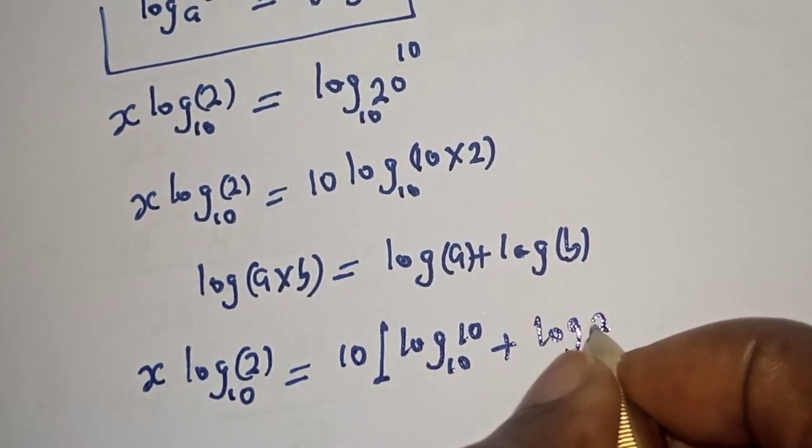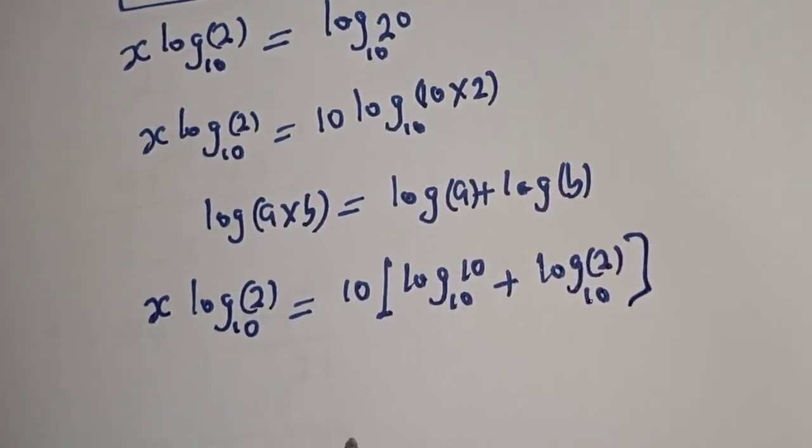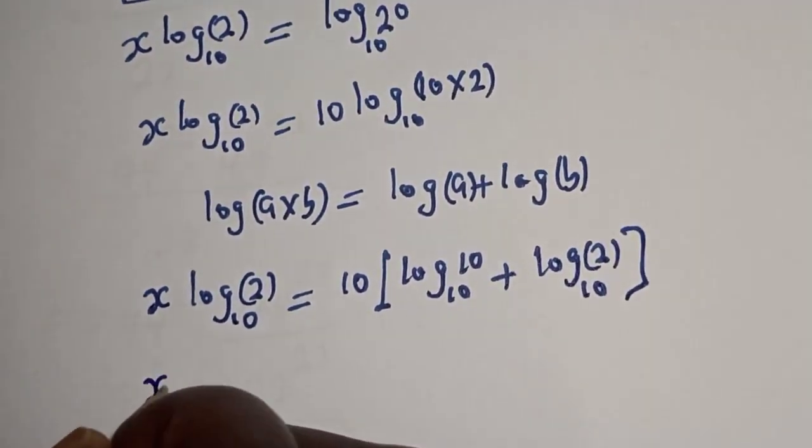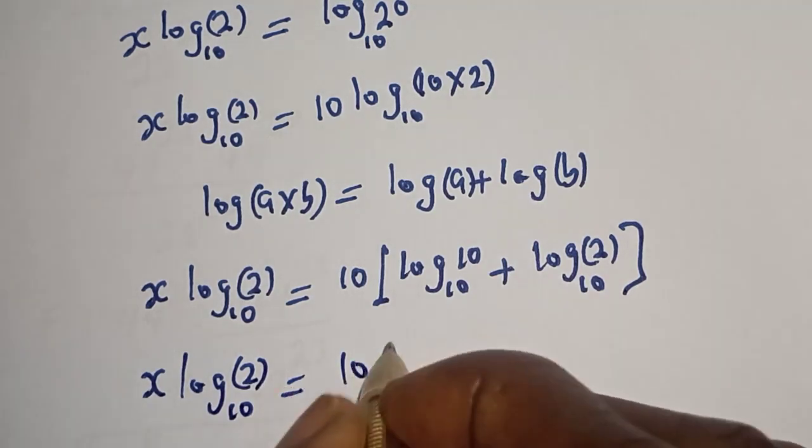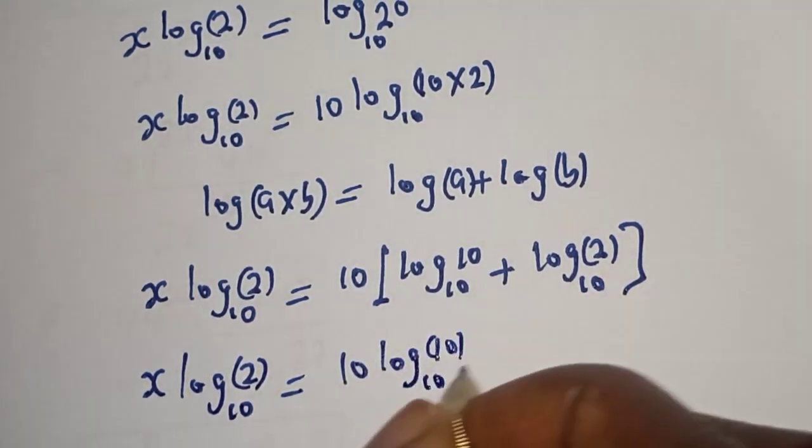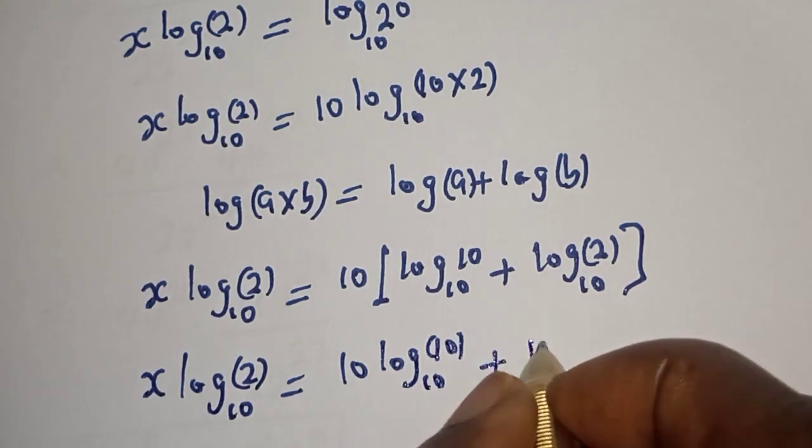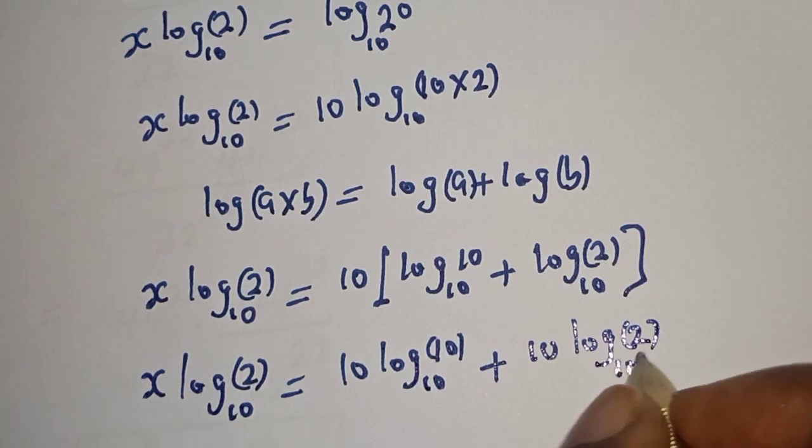This can be written as x log 2 base 10 is equal to 10 log 10 base 10 plus log 2 base 10. Let's open the bracket with 10: 10 log 10 base 10 plus 10 log 2 base 10.